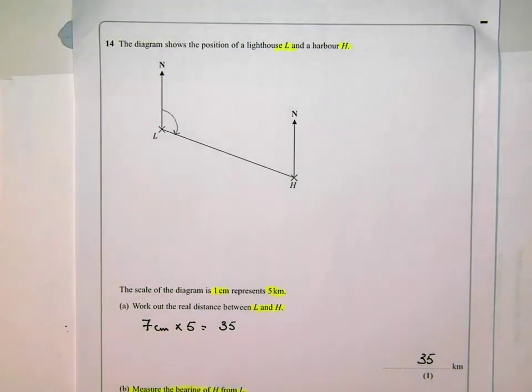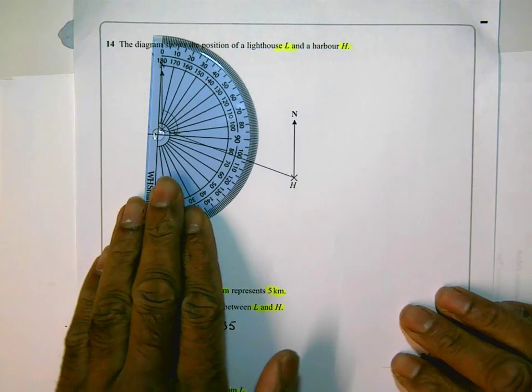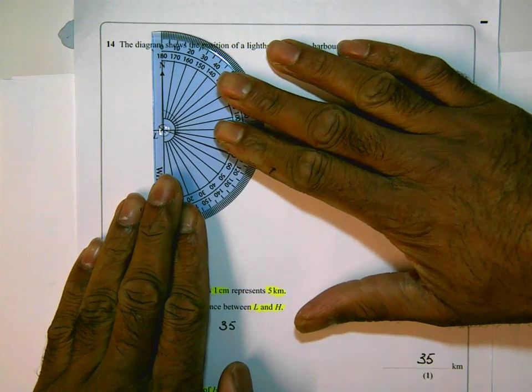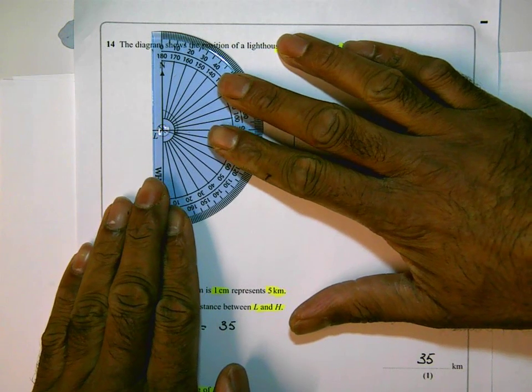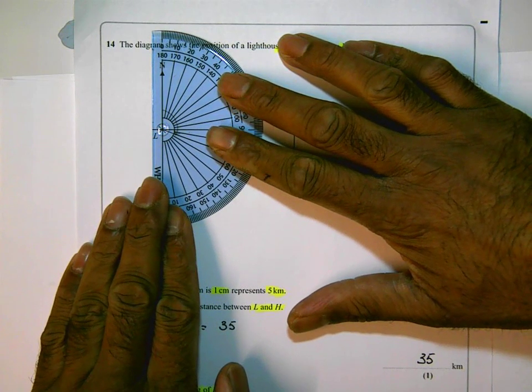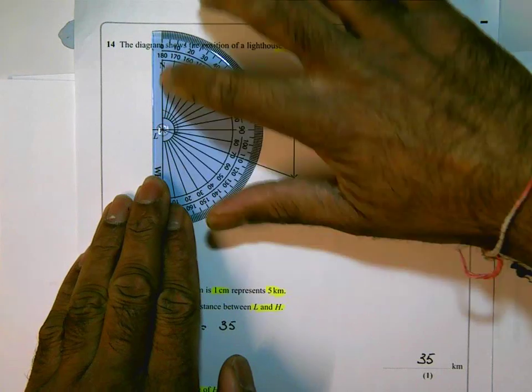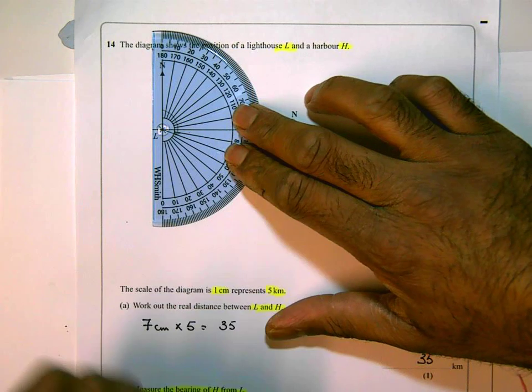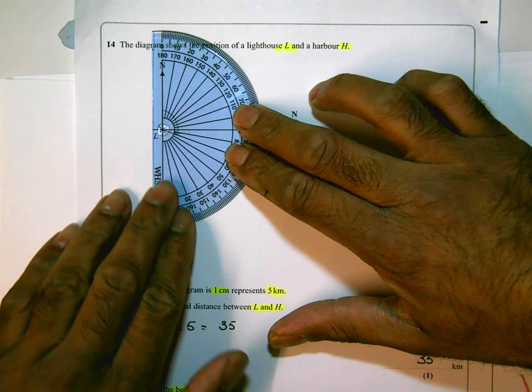Okay, so I need a protractor for this. There's no other way of measuring it. I'm going to make sure that the cross of the protractor is bang on L, and I've lined up the zero line on the north line there. The zero line on the protractor, so you can see that that's pretty much spot-on.